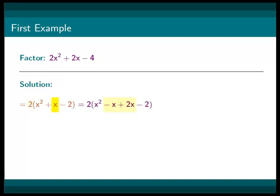Then we will split x into negative x plus 2x. Then we will factor an x from x squared minus x and a 2 from 2x minus 2. Then we will be able to factor a common factor of x minus 1.